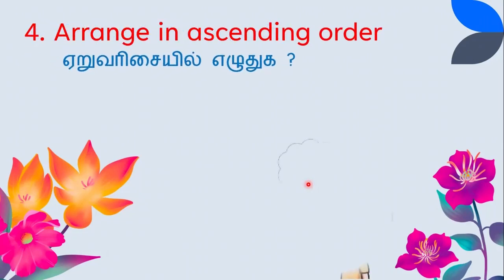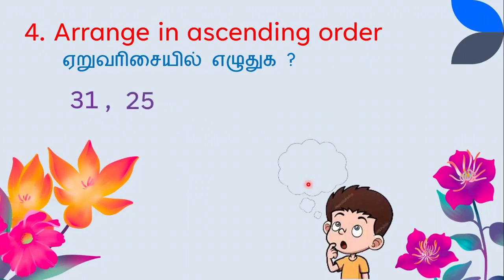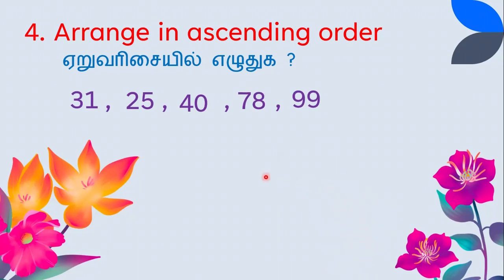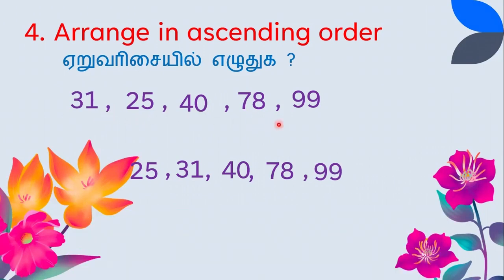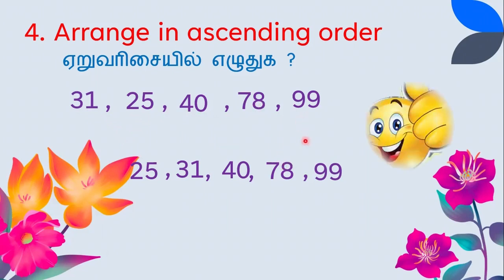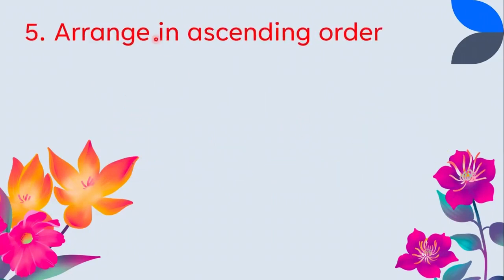Arrange in ascending order: 25, 31, 40, 78, and 99. We compare the tens place — all tens digits are different. The small tens digit is 2, that is 25; next is 3, that is 31; next is 4, that is 40; next is 7, that is 78; and 9, that is 99. Ascending order: 25, 31, 40, 78, 99.